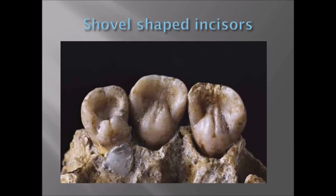Shovel-shaped incisors - we've gone over these before. These are unique ridges on either side of the incisor teeth. They usually show up most prominently in the upper incisors but can also appear in the lower, mandibular incisors. Very, very common amongst Asiatic groups.